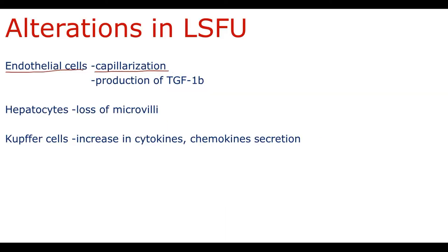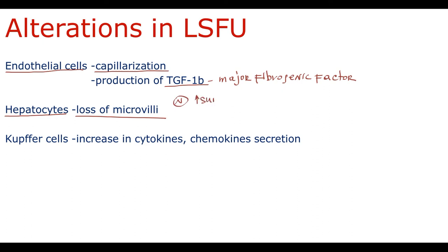When endothelial cells receive pro-inflammatory signals, they start to produce transforming growth factor beta-1, which is the major fibrogenic factor that stimulates activation of hepatic stellate cells. In addition, hepatocytes also undergo structural changes — they lose their microvilli. In normal condition, microvilli increase the hepatocyte surface area and absorption capacity. But because of capillarization and changes in extracellular matrix structure, nutrient delivery is decreased, so there is no need for such a large surface area — that's why hepatocytes lose their microvilli. Also, Kupffer cells become activated and start to excessively secrete pro-inflammatory cytokines and chemokines.